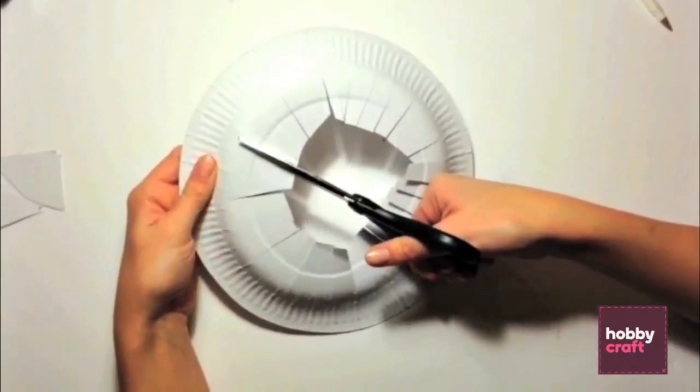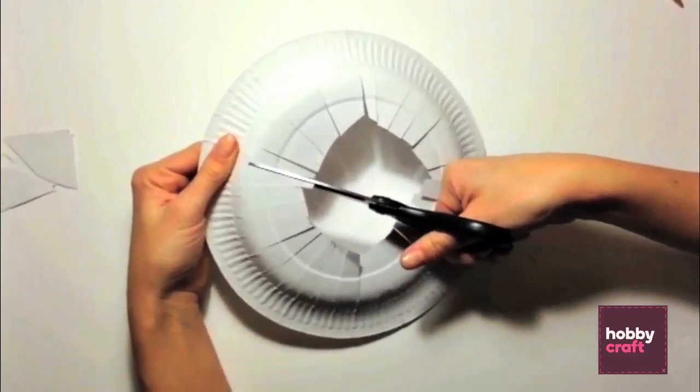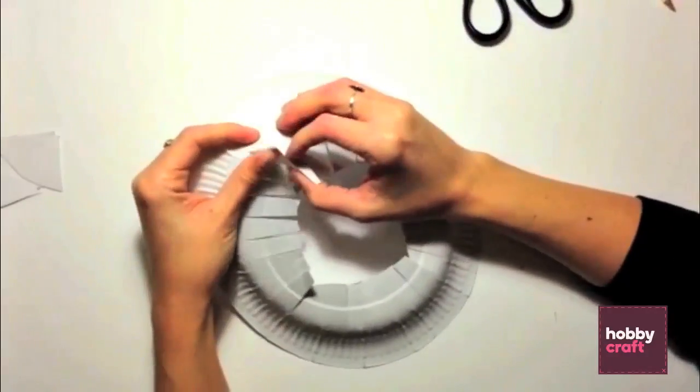Cut a big hole in the middle of the plate and then make lots of small snips out to the rim. Fold these tabs back so they are pointing upwards.